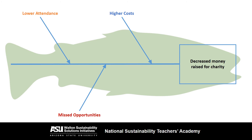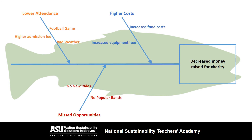Now we can deal with that complicated set of contributing factors. The factors that contributed to lower attendance are bad weather in the morning, higher admission fees, and an important football game. Higher costs were the result of increased fees for renting the rides and games and having to pay for food that wasn't sold at the event. And finally, we missed important opportunities to get new rides and hire popular bands for live music.